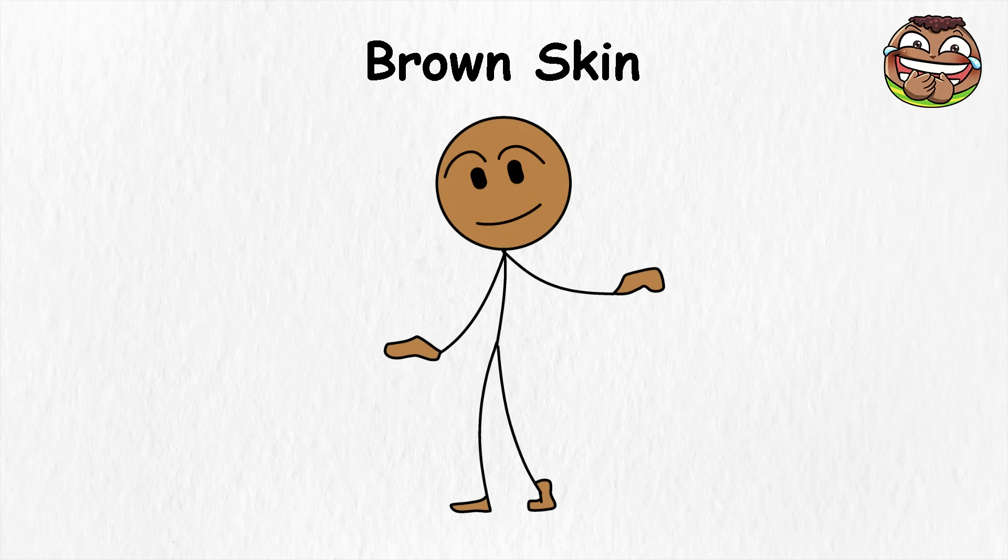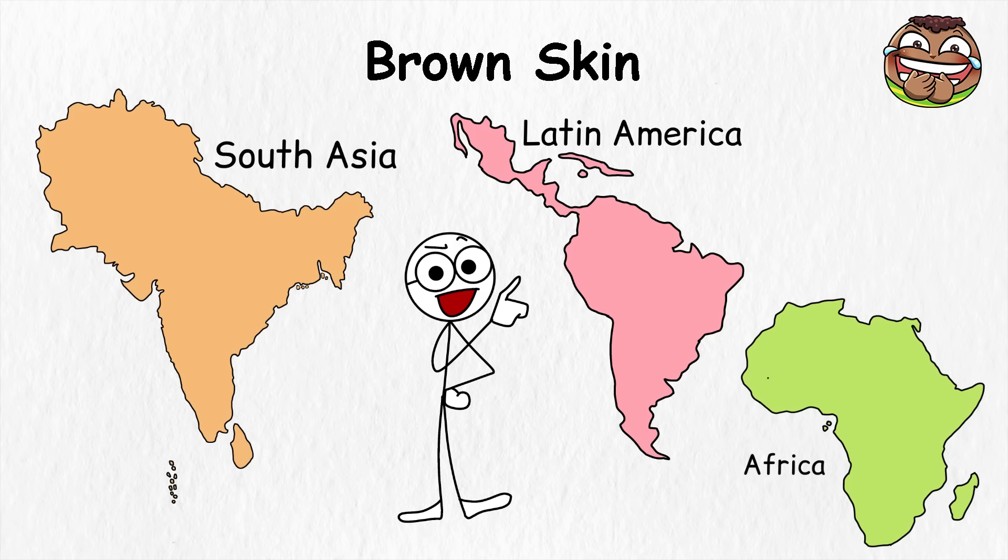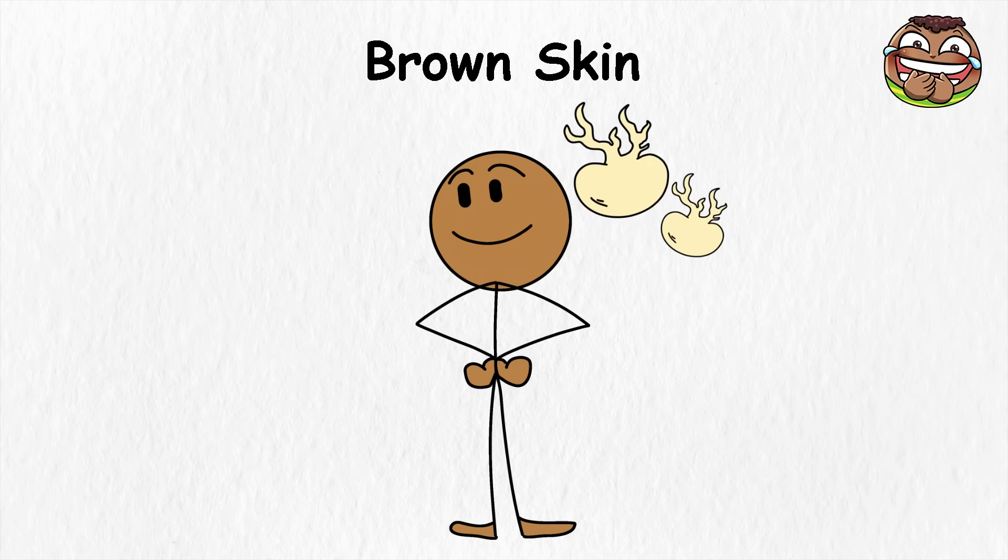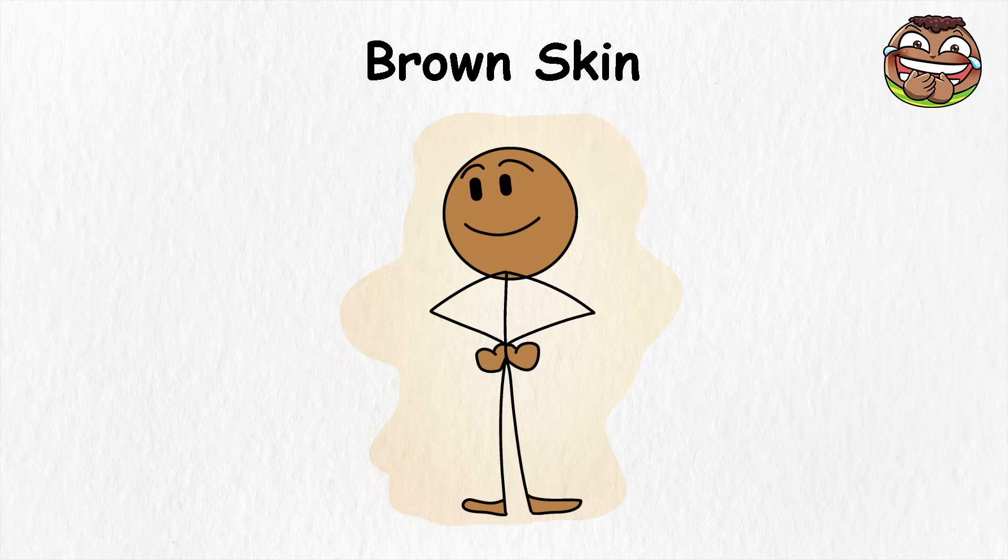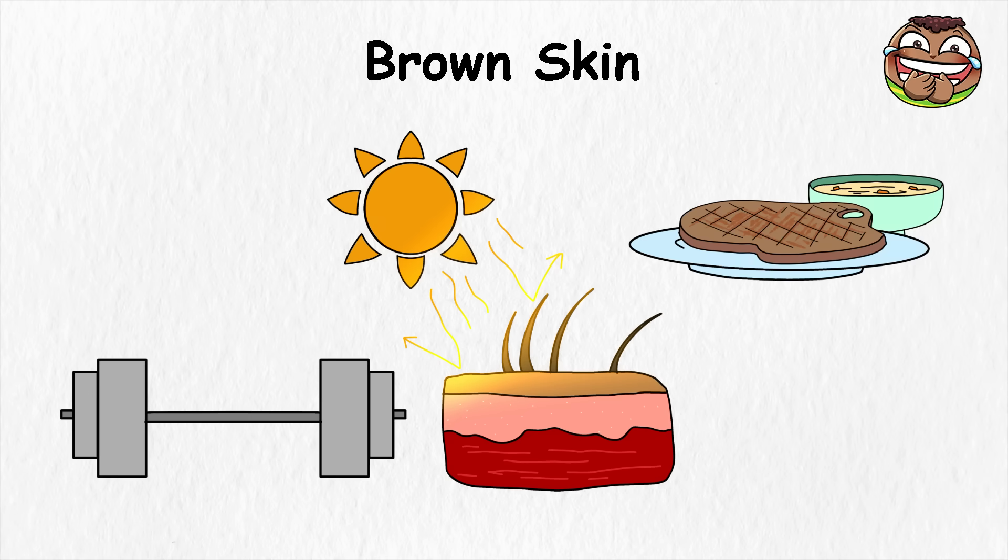Brown skin. Brown skin covers one of the widest ranges of tones on the planet, found across South Asia, Africa, Latin America, and the Pacific. It carries more melanin than lighter skin, which acts like a built-in sunscreen. That protection means it doesn't burn as quickly, but it also changes how the body absorbs sunlight, so vitamin D levels are more tied to lifestyle and diet.